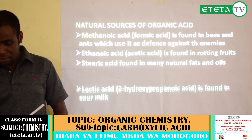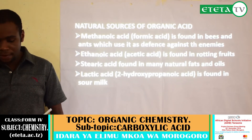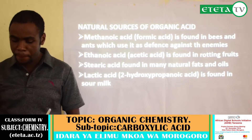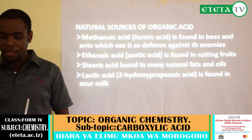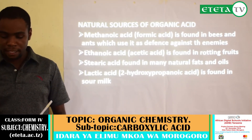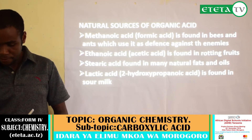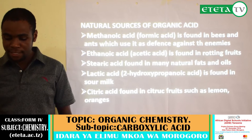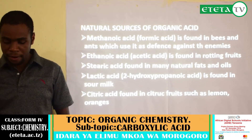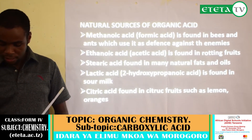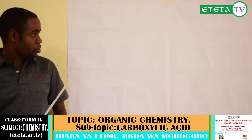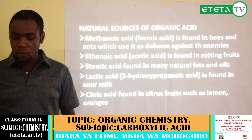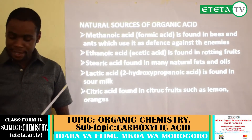Another source is lactic acid, whose IUPAC name is 2-hydroxypropanoic acid — this is found in sour milk. Another is citric acid, found in citrus fruits such as lemon, orange, and others. So these are the natural sources of organic acid.